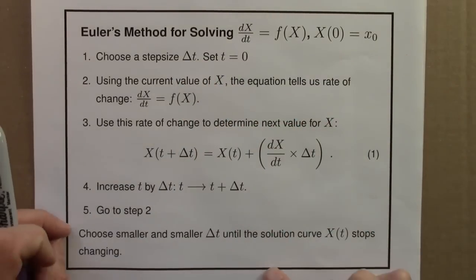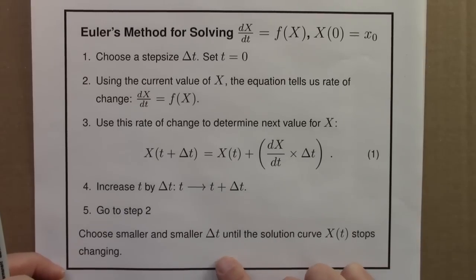doing this on a computer or a spreadsheet, and eventually one would see that your table of values, if you plotted them, your x's would stop changing, and that would be an indication that your delta t was small enough.